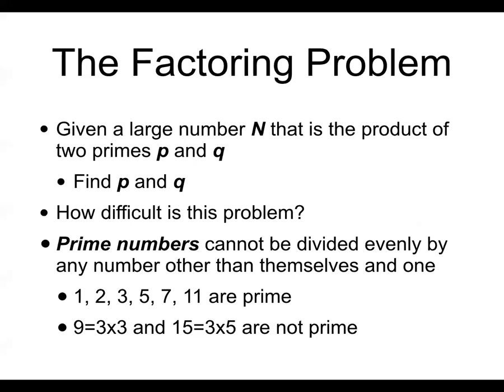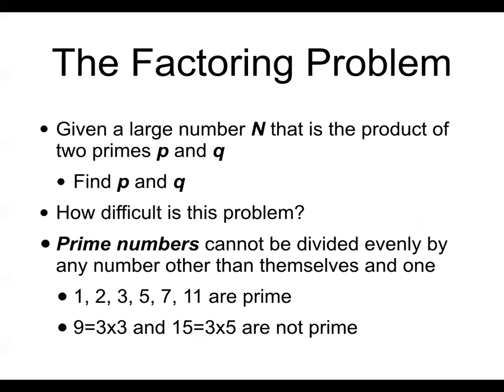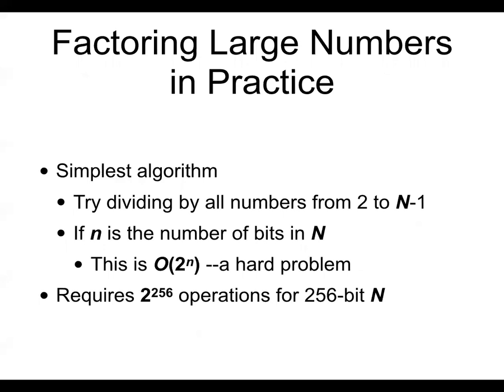So the factoring problem is the one that works under RSA. So if you have a number n that's the product of two primes and you're trying to find p and q, this turns out to be very difficult. Now prime numbers, of course, are numbers that cannot be divided by anything else. So those numbers are prime, one, two, three, five, and seven, but nine is not prime and 15 is not prime because they're made of other factors of other numbers. So the prime numbers get gradually less common as you go up in the numbers and fall approximately as the logarithm of the number you've risen up to. So in the simplest algorithm to see if you want to factor a number, if you're trying to find n, you could just try dividing by every number smaller than n and see if it works. That would get you there. That would take two to the n.